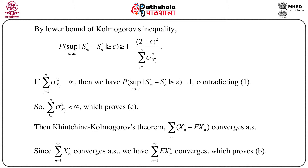Applying the lower bound of Kolmogorov's inequality gives: the probability of the supremum over m greater than or equal to n of the modulus of S_m prime minus S_n prime being greater than or equal to epsilon is greater than or equal to 1 minus (2 plus epsilon) squared divided by the summation of sigma_j prime squared, where c equals 1 here. If the denominator — the summation of variances of x_j prime — equals infinity, then this probability equals 1, which contradicts equation (1). So the summation of variances of x_j prime cannot equal infinity, meaning the summation of sigma_{x_j prime} squared must be less than infinity. This proves condition C.